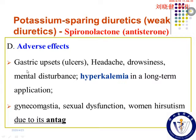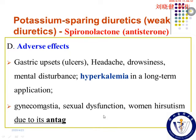Adverse effects include gastric upset, even ulcers, headache, drowsiness, mental disturbances, and even hyperkalemia with long-term application. Because of its higher affinity to progesterone and androgen receptors, this drug may also induce effects due to antagonism of sexual hormones.